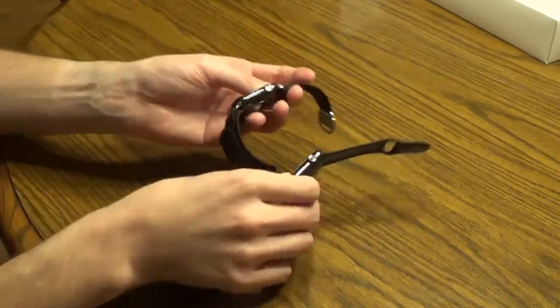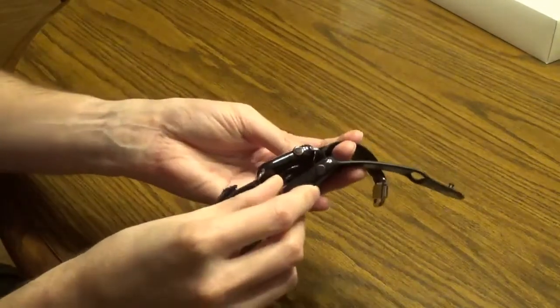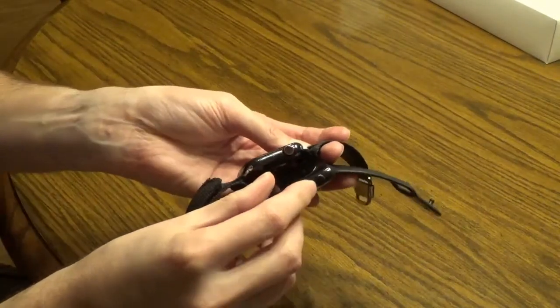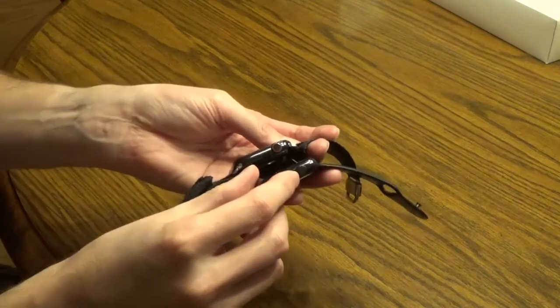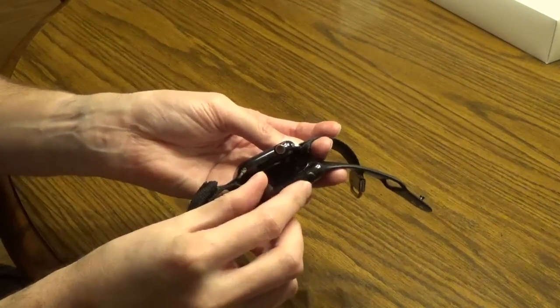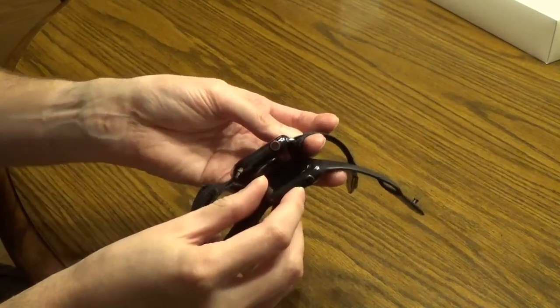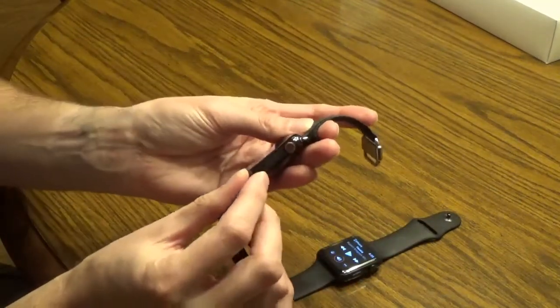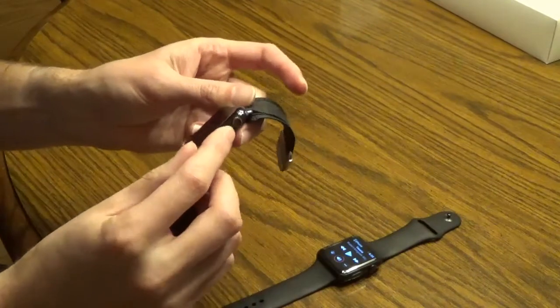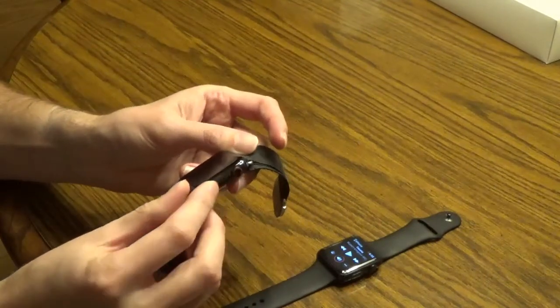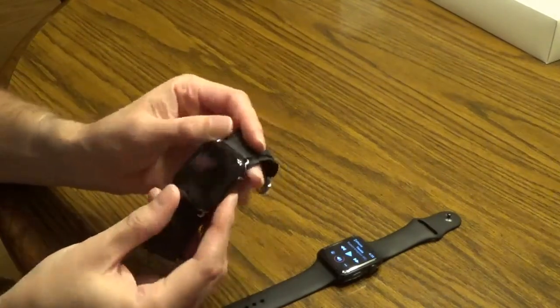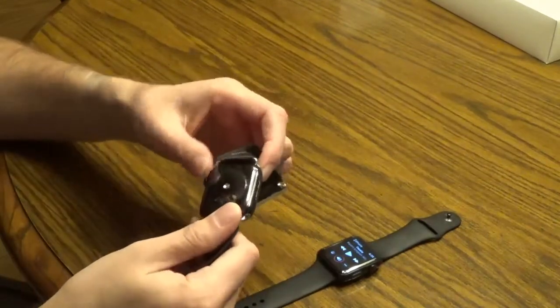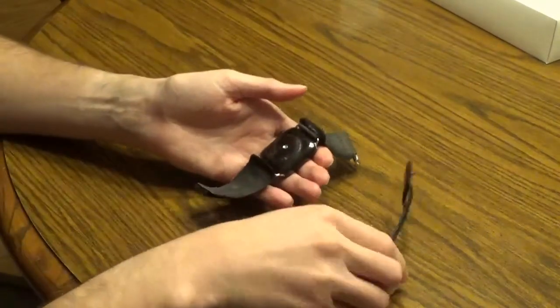As I mentioned, the first generation, the power button sticks out quite a bit. I never really had a problem with it catching on anything. But on the fourth generation, it's pretty flush. You can hardly tell it's there. You just kind of have to guess. If it's in the dark, you kind of have to guess where it is.